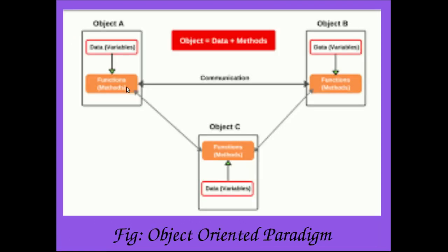Here is a figure showing the object oriented paradigm. We have object A, object B, and object C. Each object contains its own data and functions. The functions of each object are used to access that object's data. An object is data plus methods — methods are also known as functions. So an object equals data plus methods.